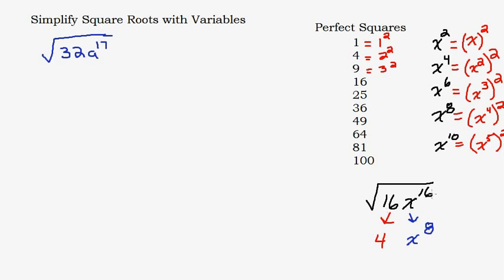The 16 in the coefficient and the 16 in the exponent are treated differently. The square root of 16 is 4 because 4 times 4 is 16. The square root of x to the sixteenth is x to the eighth because x to the eighth squared equals x to the sixteenth. So when dealing with exponents, you simply divide the exponent by 2. For whole number coefficients, you find what times itself equals that number.